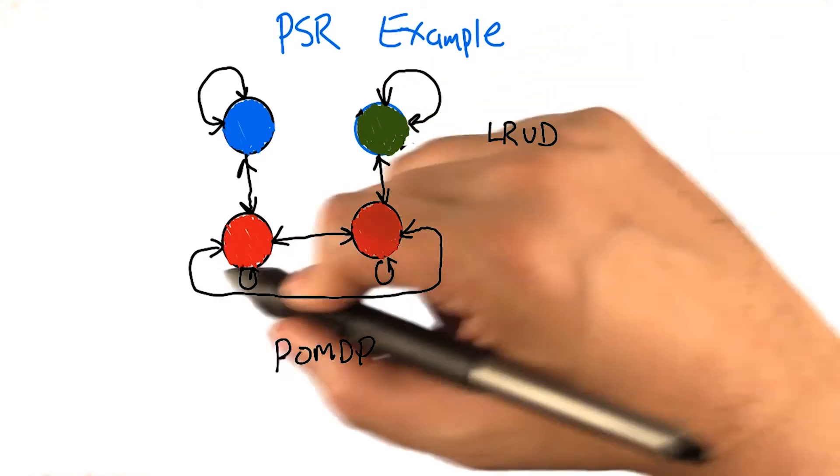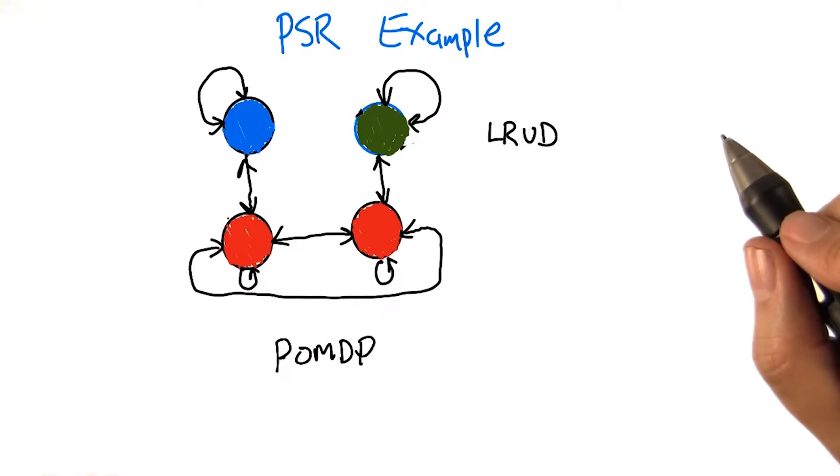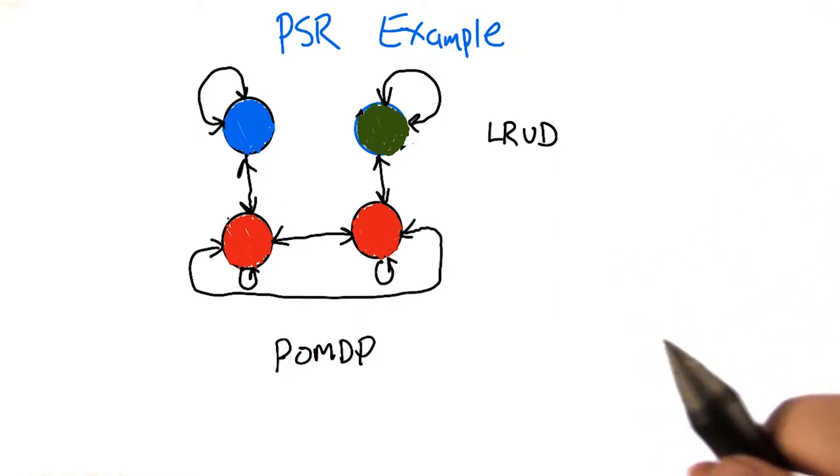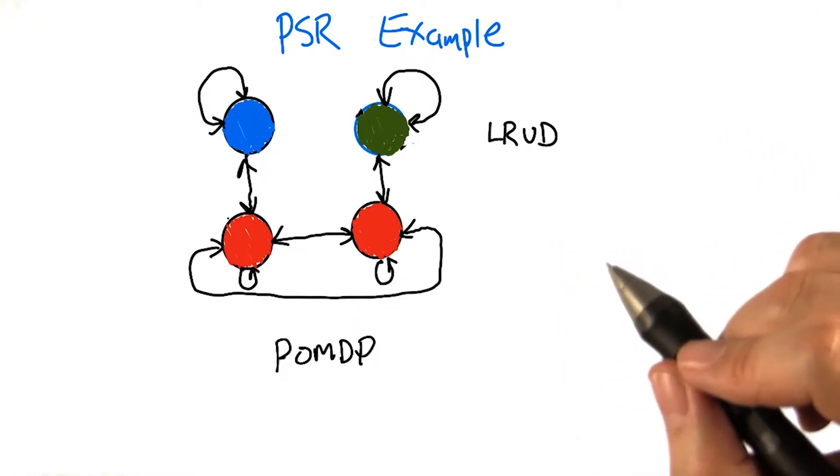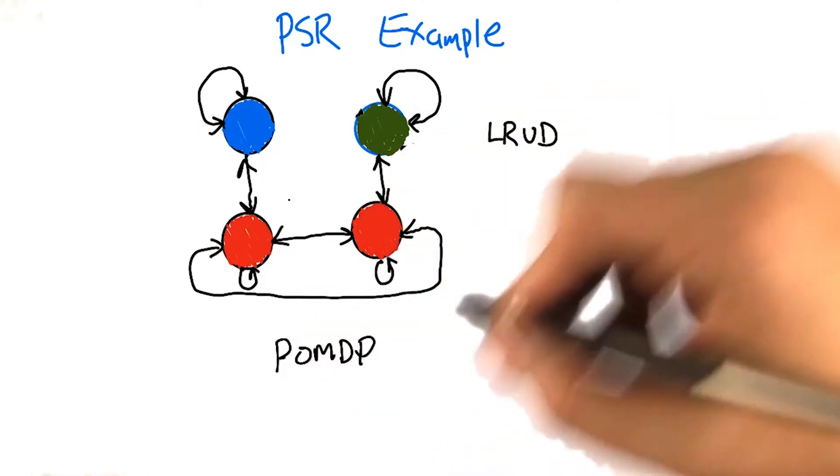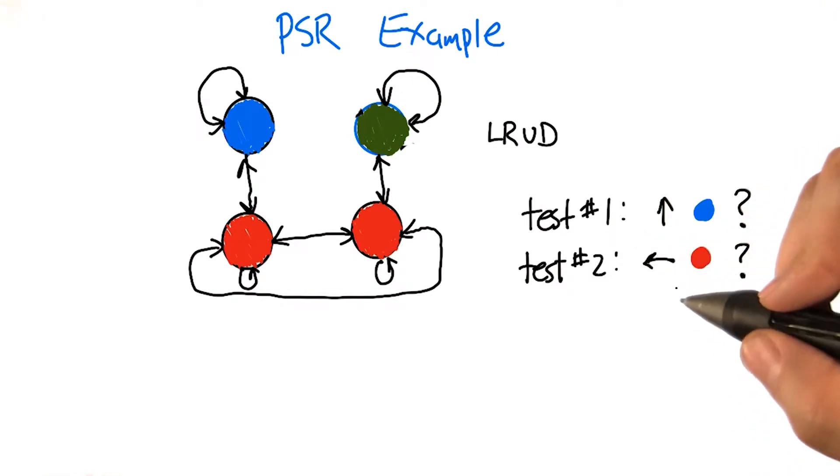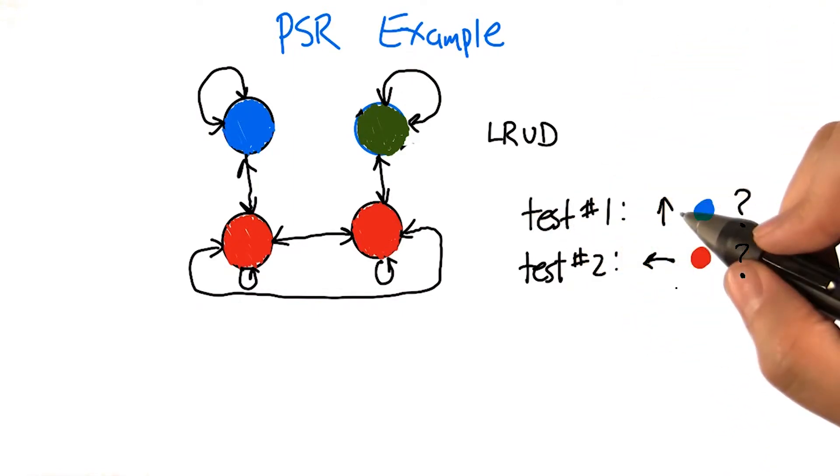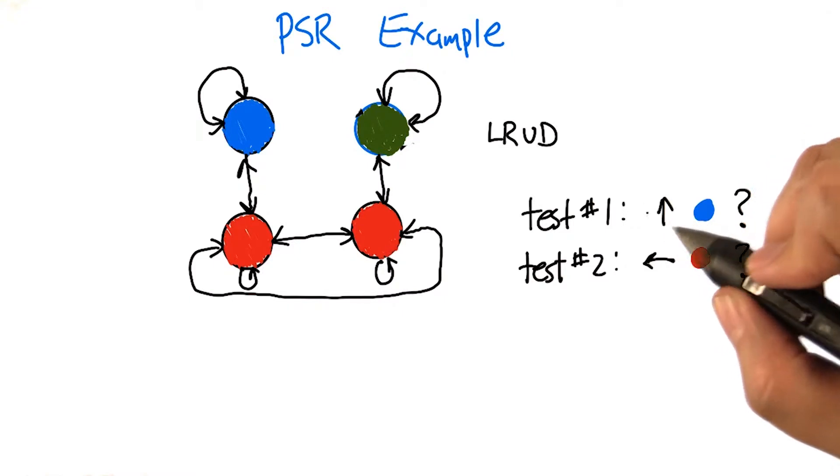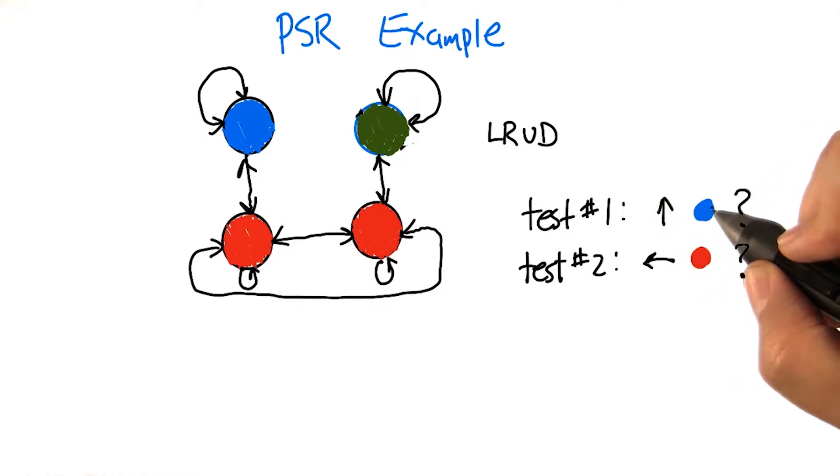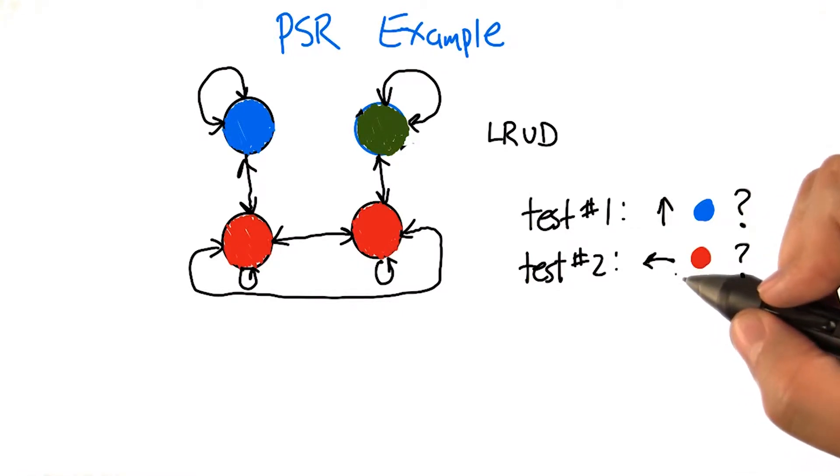We're going to try to re-represent the same idea, the same system, the same model, but not using a POMDP, but instead by using a set of predictions. So I'm going to claim that the tests that we're going to use for this representation, well, there's lots of possibilities. But what we're going to do is say, hey, what would happen if you were to go up, would you see blue? So what's the probability that you'd see blue after going up? And if you were to go left, would you see red? What's the probability of seeing red if we were to go left from the current state?